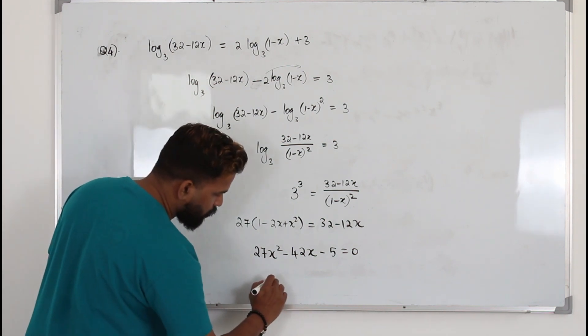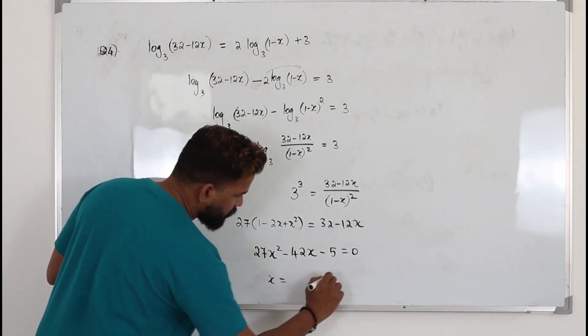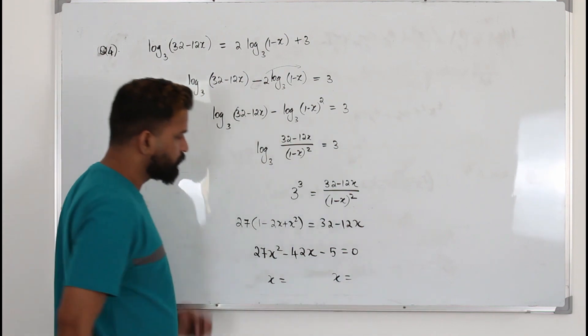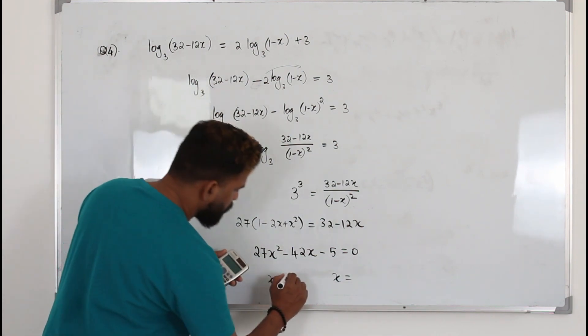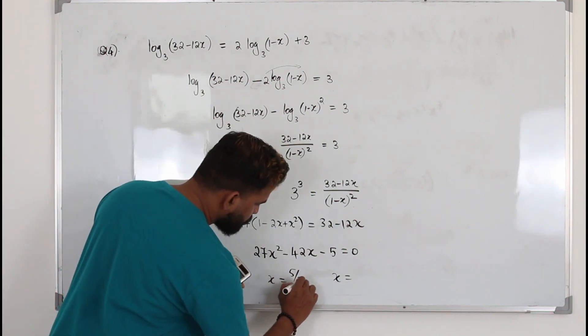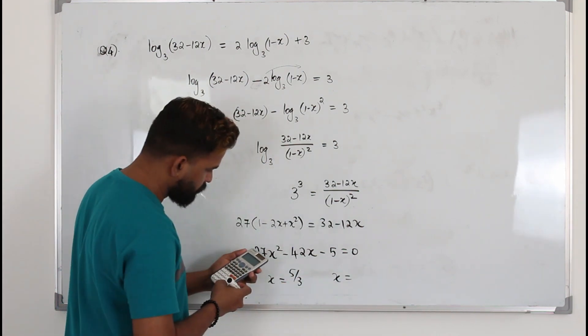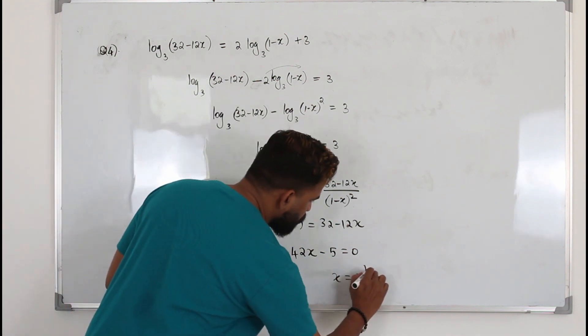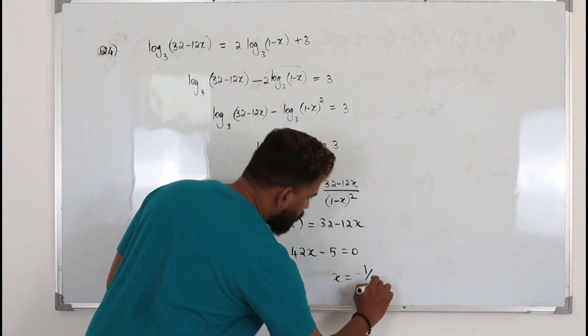Now solve for x — you get two x values. We got 5 over 3 and negative 1 over 9.